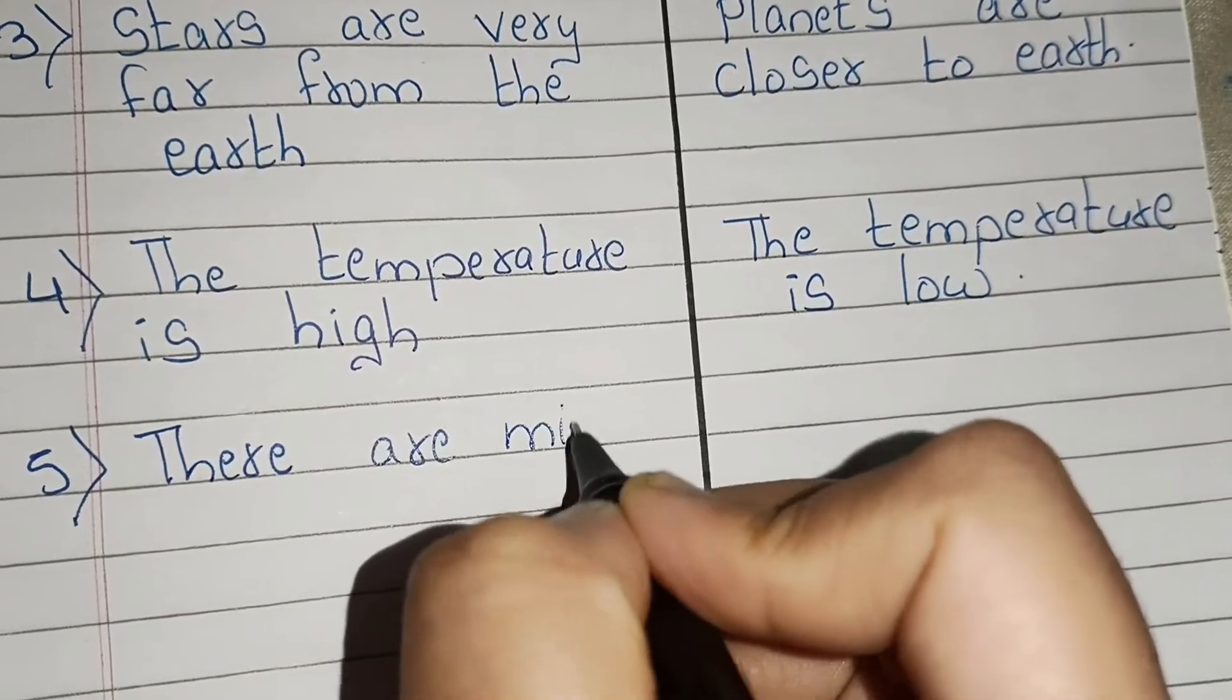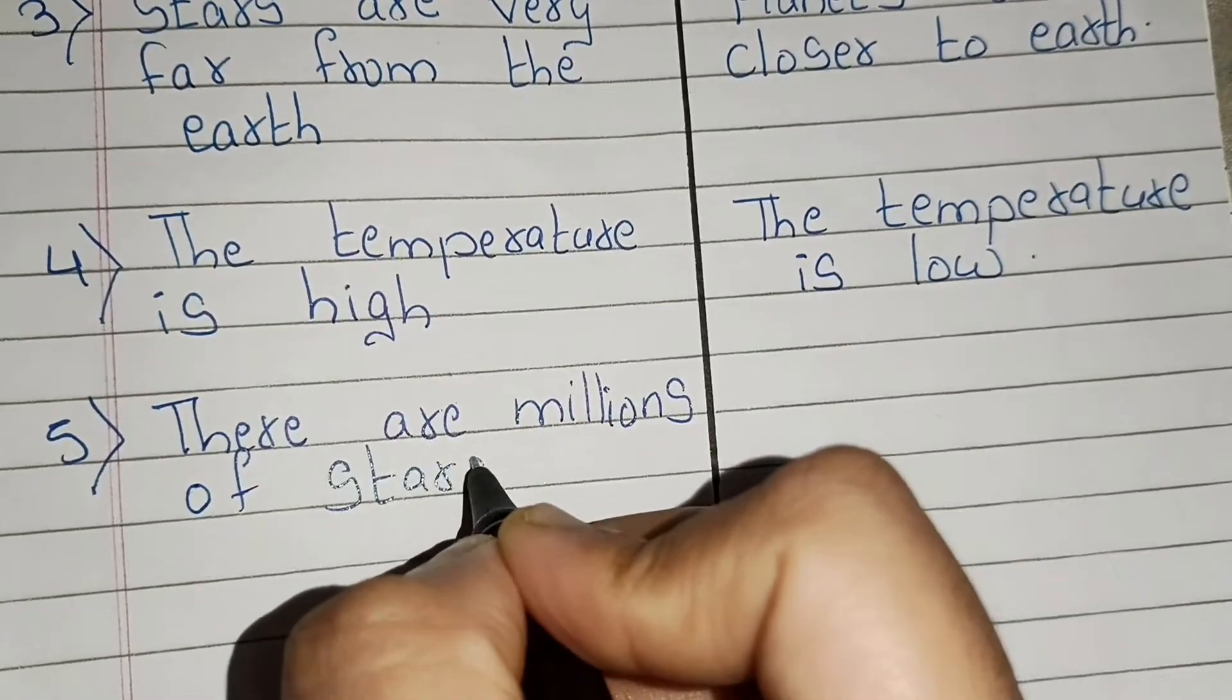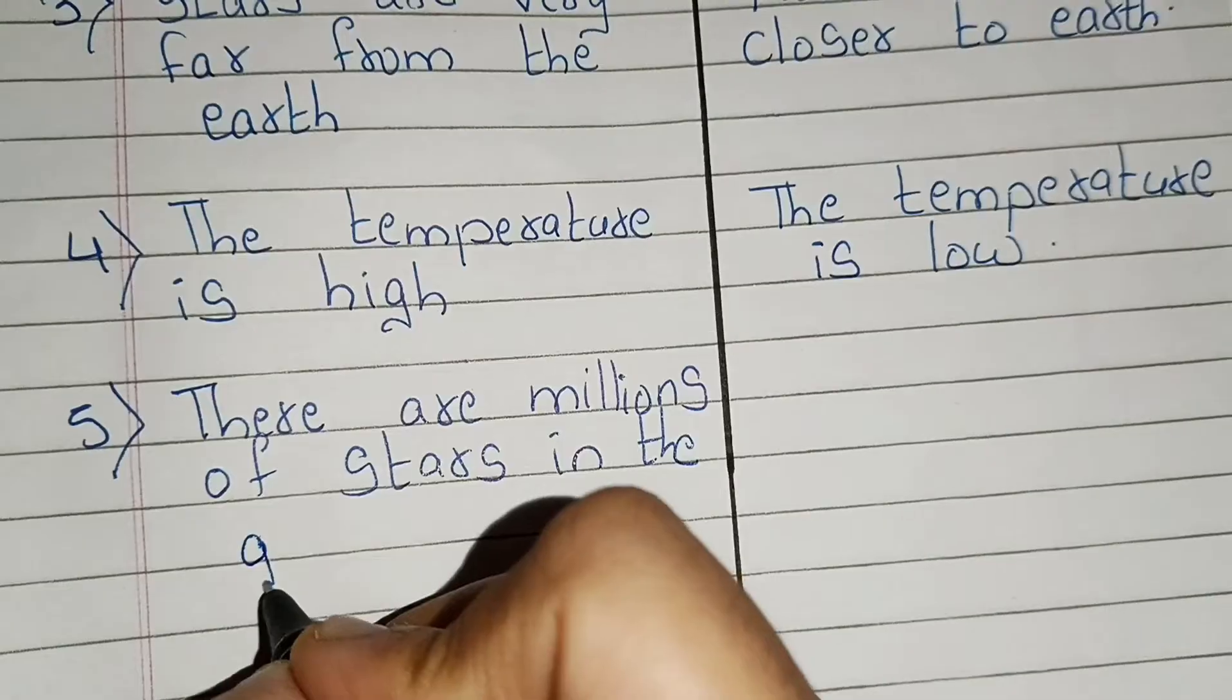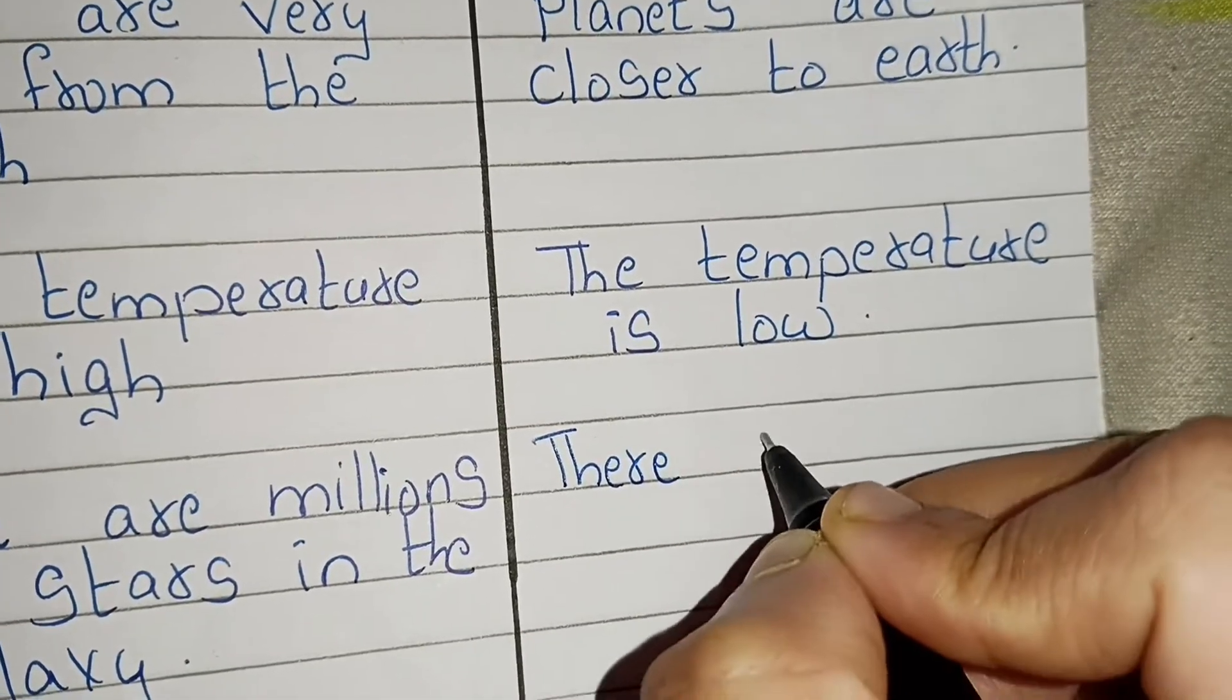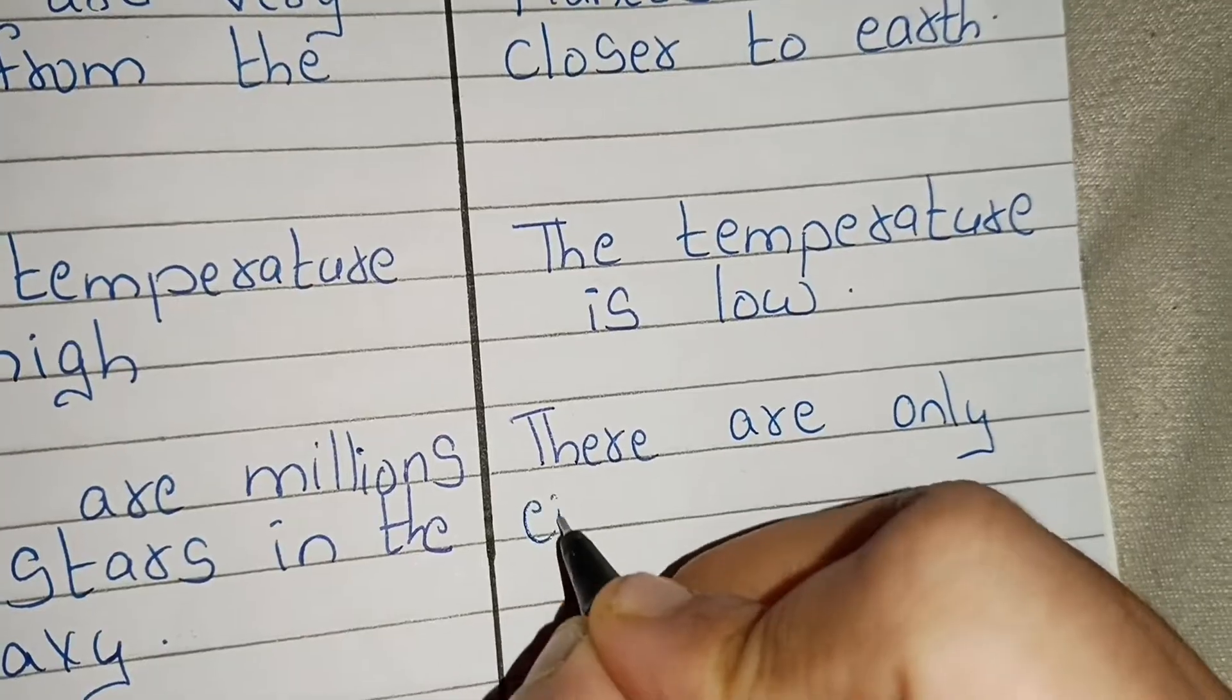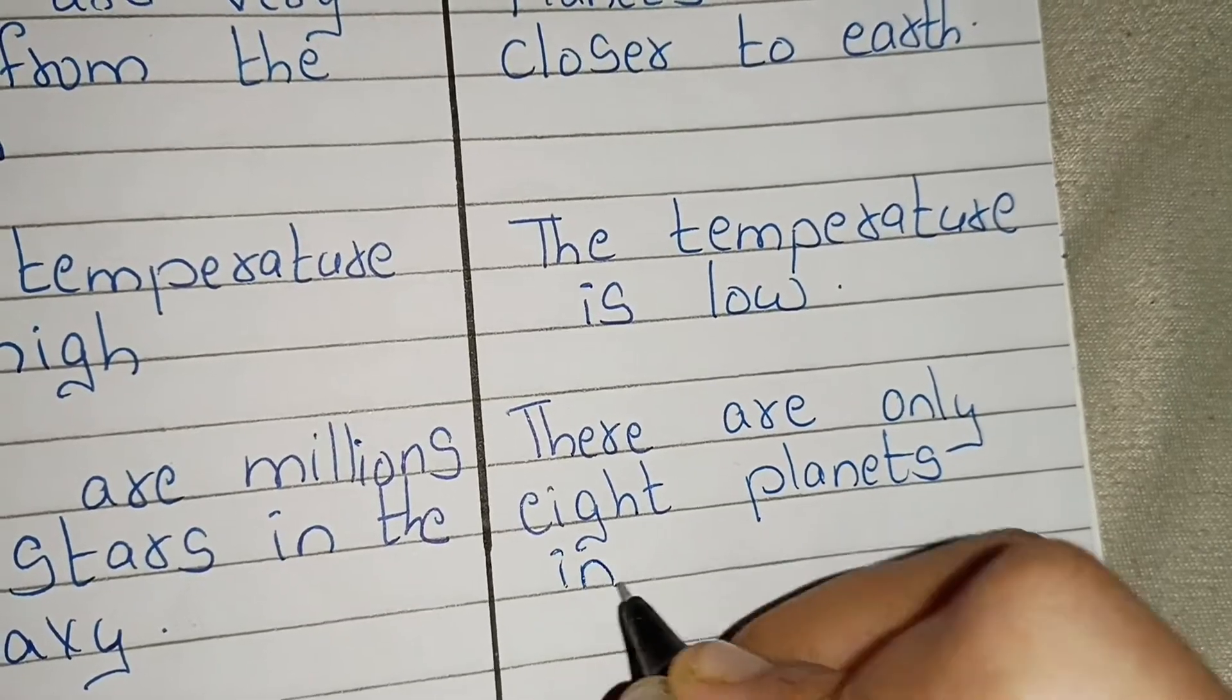Point number five. There are millions of stars in the galaxy. But in planets, there are only eight planets in the galaxy.